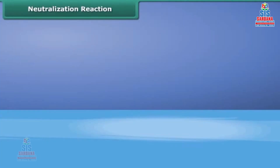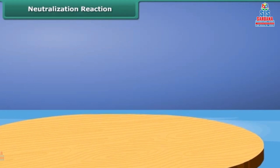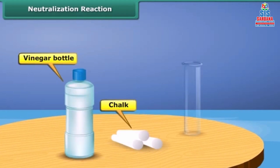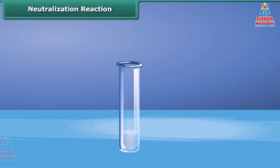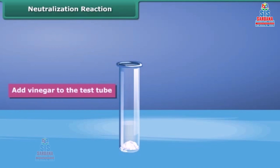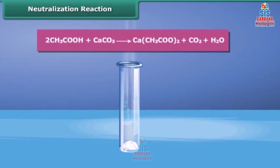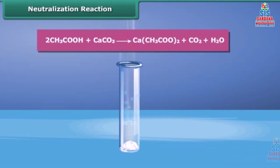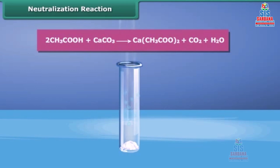To understand neutralization, drop some crushed chalk into a test tube and add vinegar. The chalk reacts with the vinegar and bubbles of carbon dioxide come out. A white solid, calcium acetate, is formed. Chalk is calcium carbonate and vinegar is an acid. When they react, carbon dioxide, water, and calcium acetate are formed. Thus, an acid reacts with a base to form a salt.